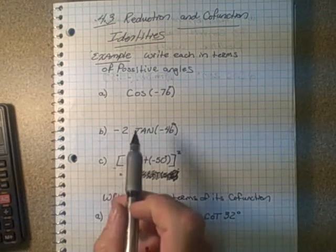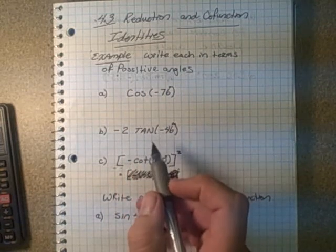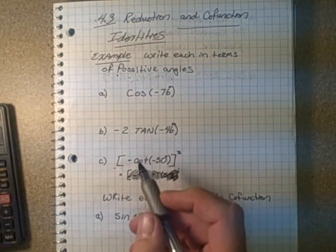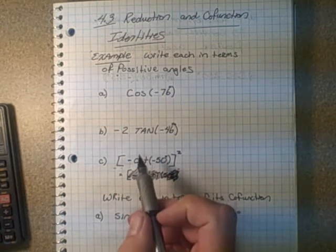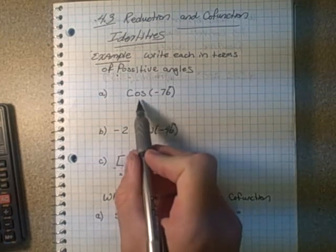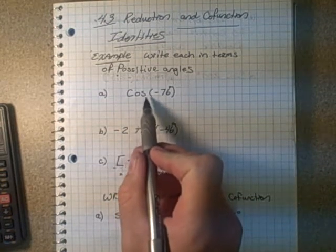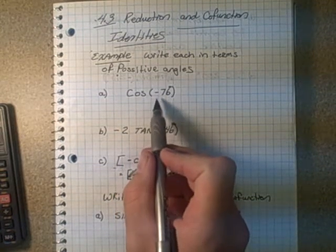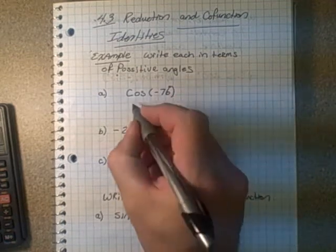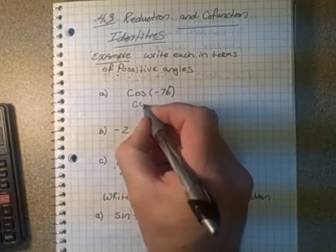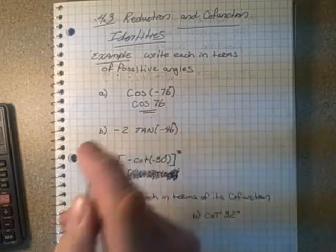The first type says: write each as positive angles. If you look at page 152, look at the reduction identity for cosine. Cosine of a negative angle is just the cosine of that angle positive. So this would just be written as cosine 76 as a positive angle.